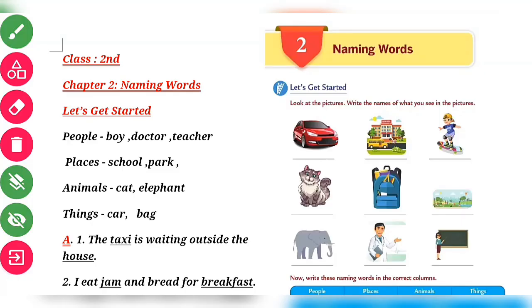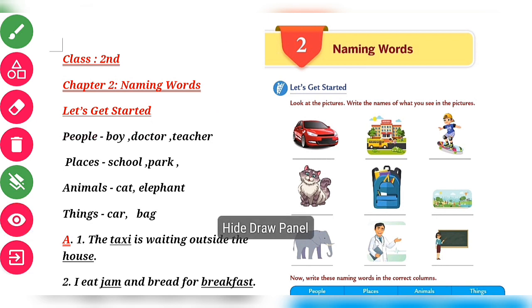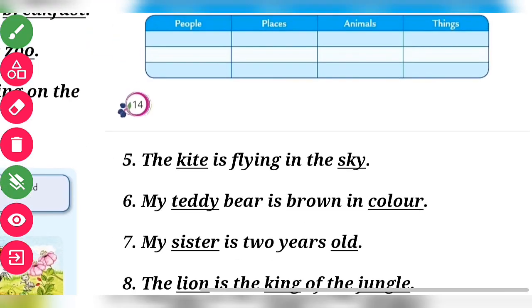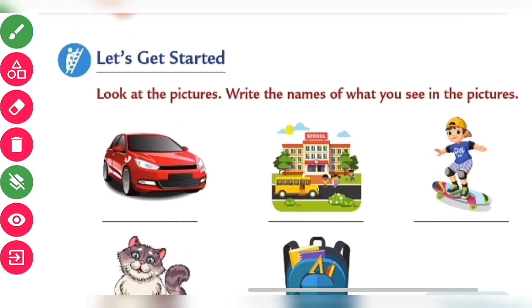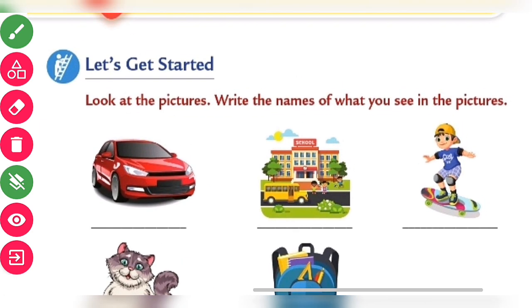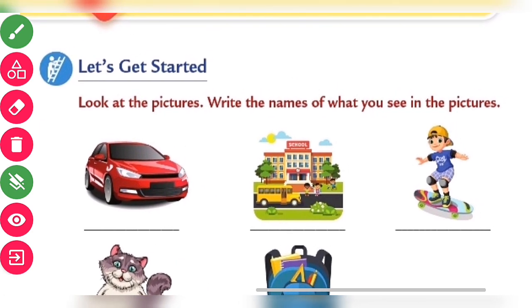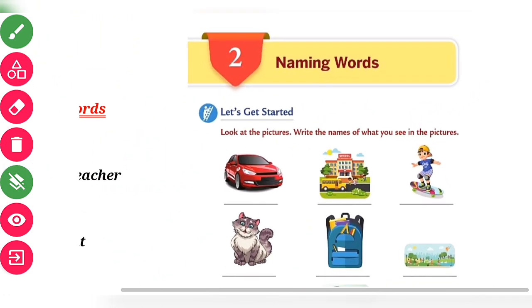This is class, chapter number two: naming words. Without any delay, let us begin the class. Take out your book, page number 14. The first page says: look at the pictures and write the names of what you see in the picture.